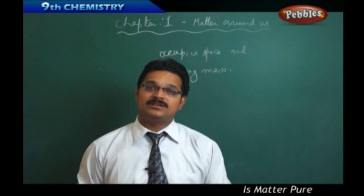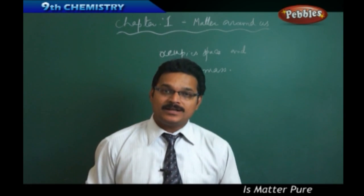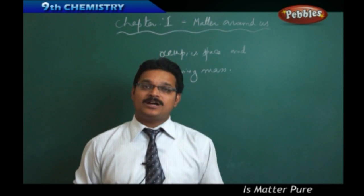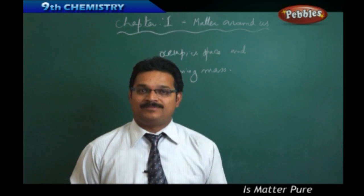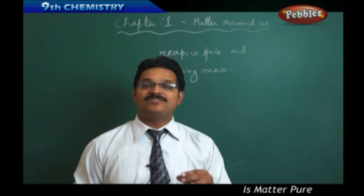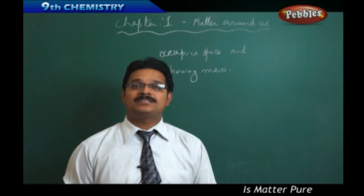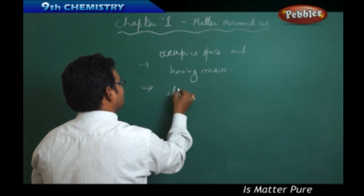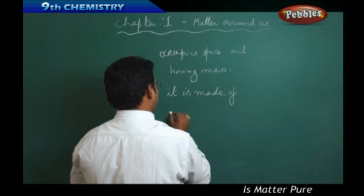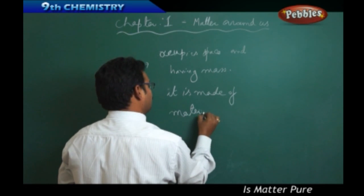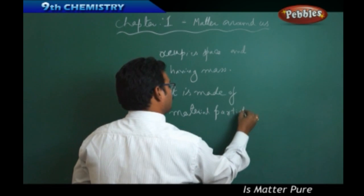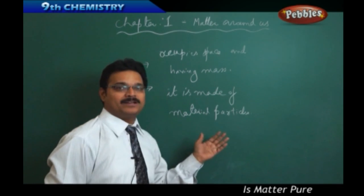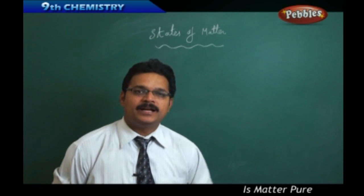The remaining scientists then started doing research work on those things. Today we know that an atom consists of a nucleus, around which we have electrons, and inside the nucleus we have particles like protons and neutrons. All these particles are much smaller than the atom. So before 1900 the definition was that matter is made of atoms, but today we say that matter is made of material particles.